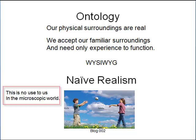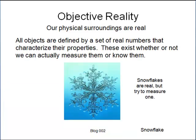Although this works well in our world — for example, animals function very well without any knowledge of physics — naive realism does not work at the microscopic level. Objective reality means that objects around us exist and possess exact values of their properties independently of our intervention. If an observation is made, then it must be possible for others to confirm it by independent observation.